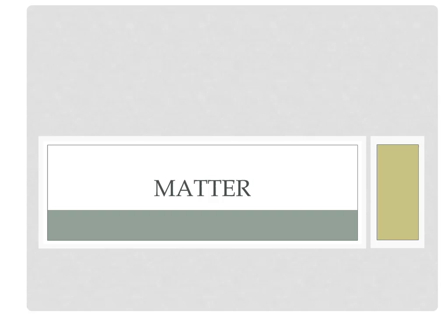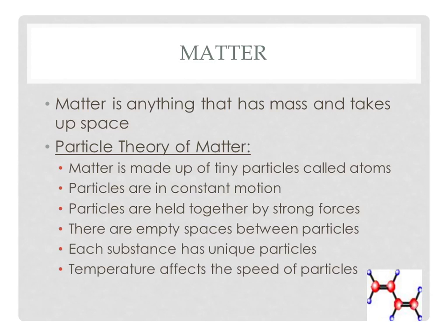It's time for us to begin our second unit of the year. This set of notes is basically an introduction on what matter is and a few theories that have to do with how matter works, and then we'll discuss the first way that scientists classify matter based on the particles that make it up. Matter is anything that has mass and takes up space — basically the stuff that makes up everything you see.